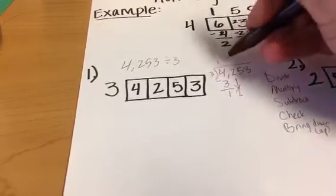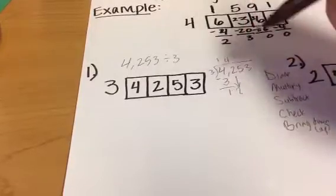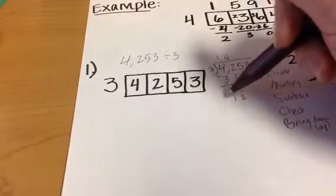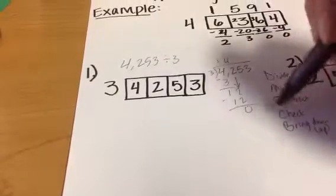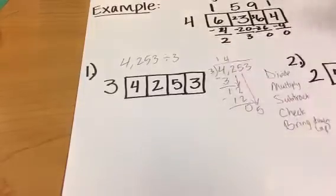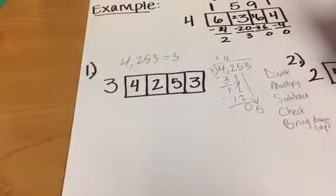How many times does 3 go into 12? 4 times. That was our division step. Then our multiply step, 3 times 4, 12. Subtraction step, check, 0 is less than 3. So we bring down the 5. So it goes on like that in the traditional way.